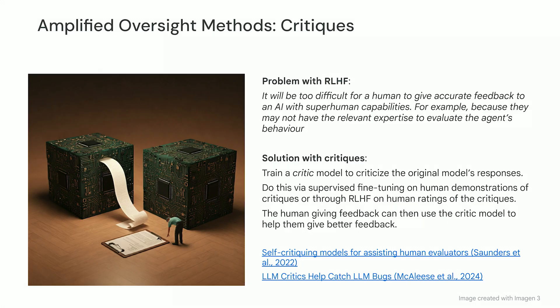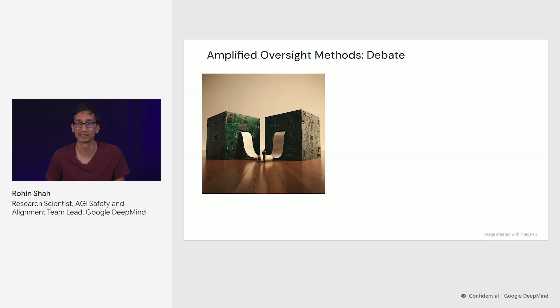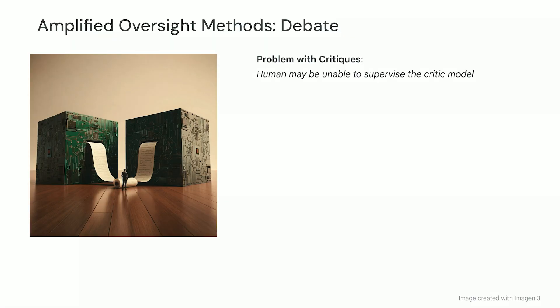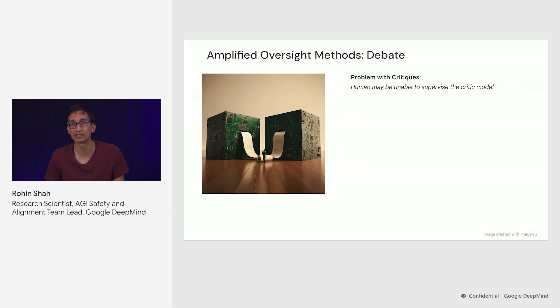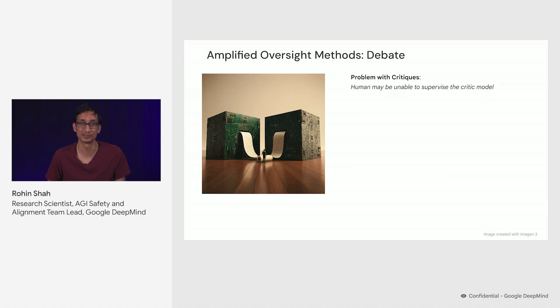Even if you are doing critiques, it's quite plausible that more problems arise. Specifically, if the AI systems are sufficiently capable, then maybe the humans won't be able to supervise the critique model either. It can be quite hard to know if a given piece of criticism refutes the central point of the original answer, or maybe there would be a critique of the criticism that would make the original answer look correct again. So the natural solution is to do many rounds of critique — that is, debate.